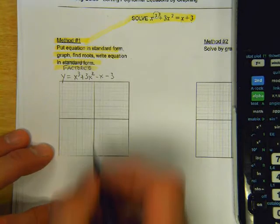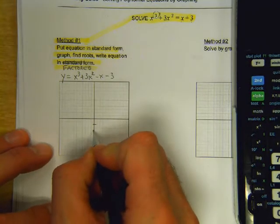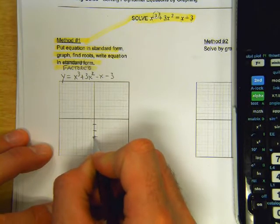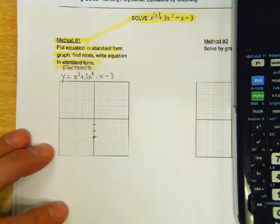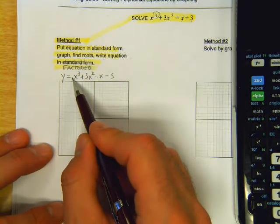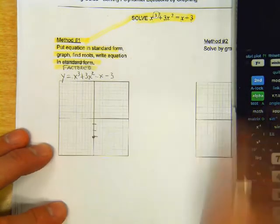And just by looking at that, we know that it's got a y-intercept of negative 3. The right hand goes up and the left hand goes down. So that's pretty good so far.